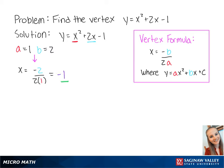which is equal to negative 1. Now we plug negative 1 into the original equation. This gives us y equals negative 1 squared plus 2 times negative 1 minus 1. This is equal to negative 2.